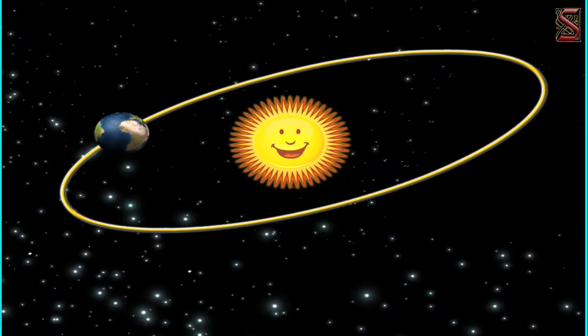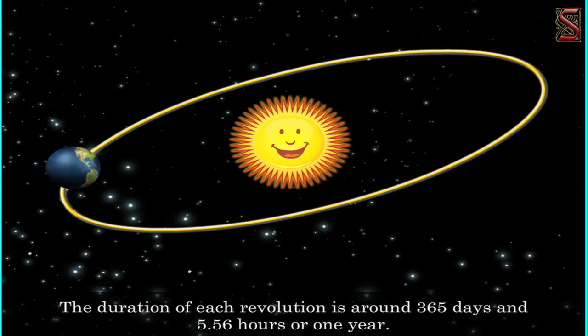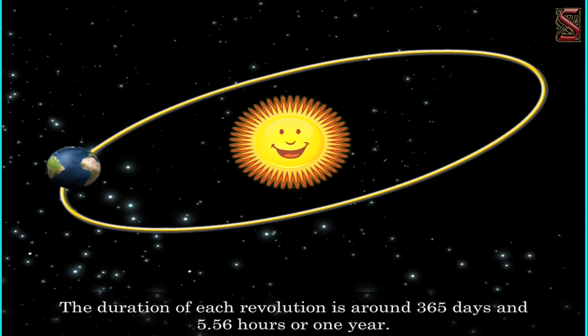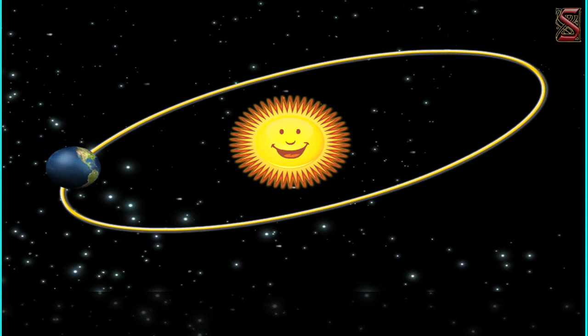As we all know, the earth not only revolves around the sun but also rotates around its own axis. The movement of the earth around the sun is termed as revolution. The duration of each revolution is around 365 days and 5.56 hours, or one year — this is the length of a year on earth. Just like the earth takes around one day to complete a rotation, it takes around one year to complete one revolution around the sun.